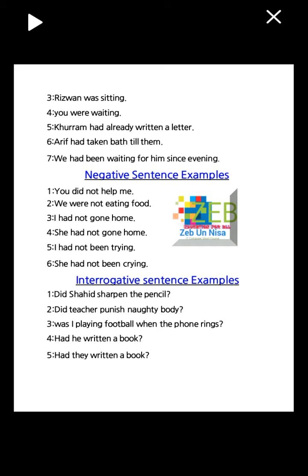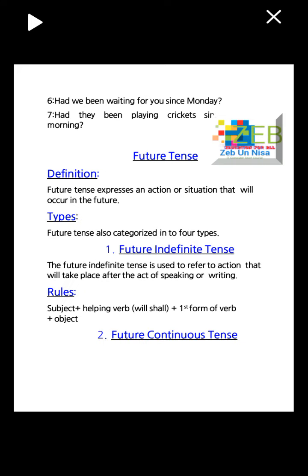Interrogative sentence examples: number one, did Shahid sharpen the pencil? Number two, did the teacher punish the student? Number three, was I playing football when the phone rang? Number four, had he written a book? Number five, had we been waiting for you since Monday? Number six, had they been playing cricket since morning?